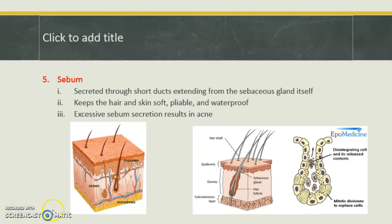Sebaceous glands have a coiled mass of tubes down in the dermis with a single tube that extends from it. The coiled tubular region is really close to the hair, so the ductwork extending from the tube on sebaceous glands is short. The purpose of sebum is to keep hair soft and prevent split ends. At certain times of our life, these glands can be overactive. They don't always attach directly to a hair — sometimes they go to the surface of the skin. During puberty, excess oil is produced, which results in acne.